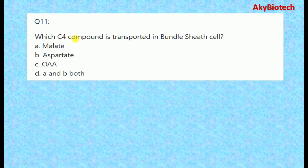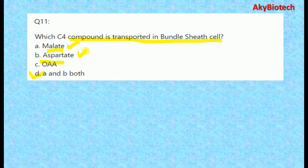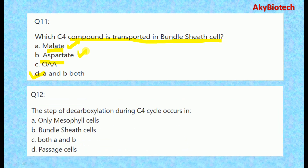Question eleven: which C4 compound is transported into bundle sheath cells? The correct option is both A and B, that is malate as well as aspartate. Question twelve: the step of decarboxylation during the C4 cycle occurs in the bundle sheath cells.